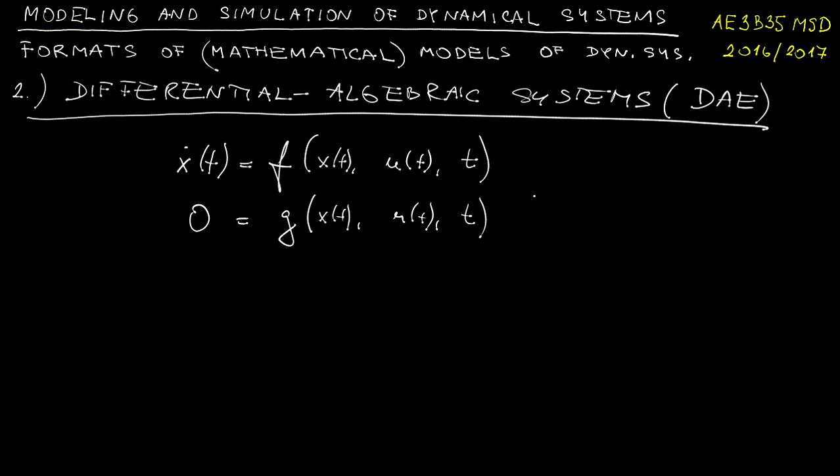0 is equal to generally non-linear function g of x, u, and t again. Now, note that unlike in the state space case where the addition of the output equation, the algebraic one, does not change the solution of the state equation. Here, there is a coupling between these two.